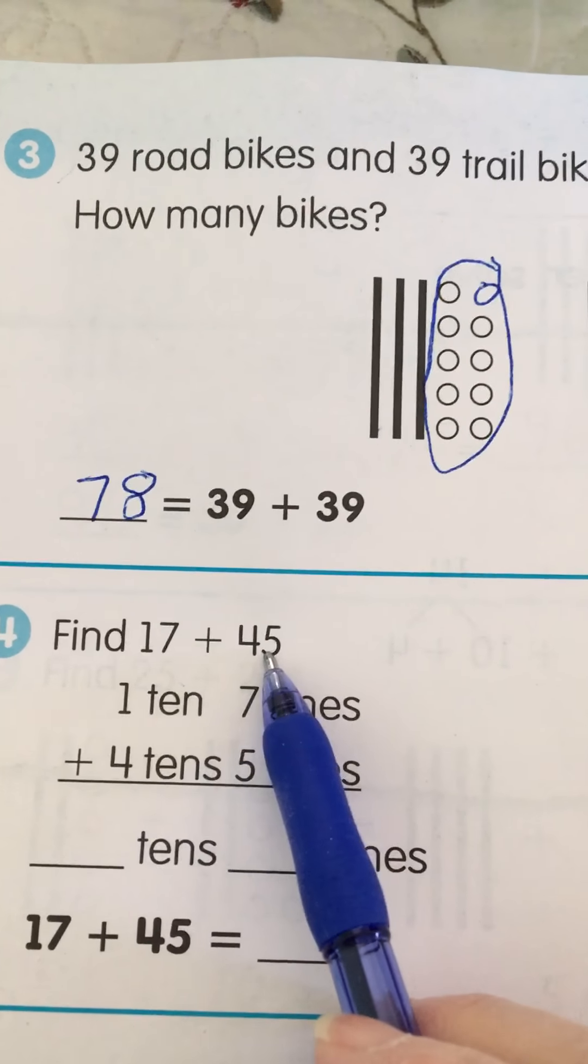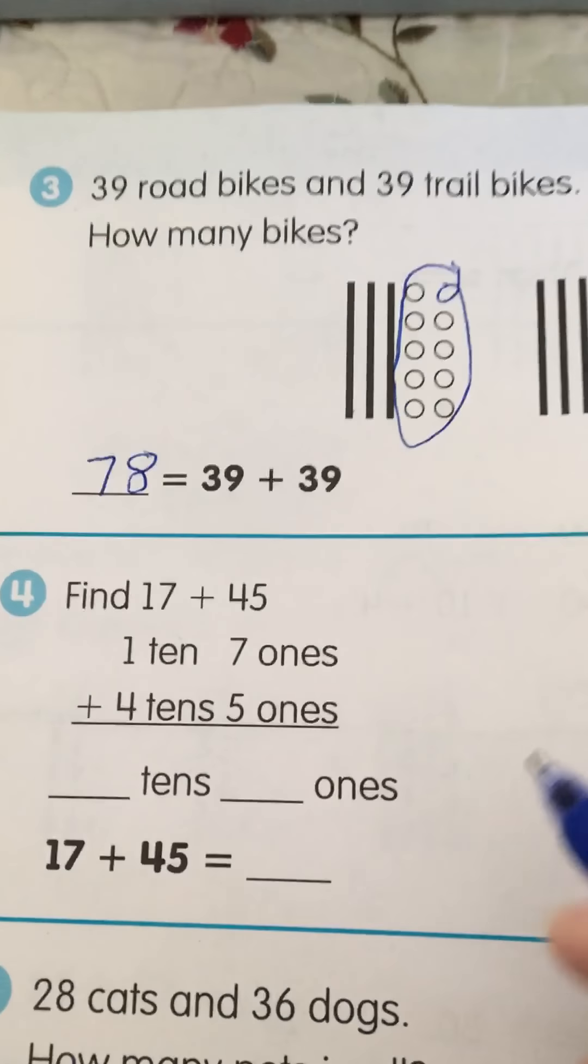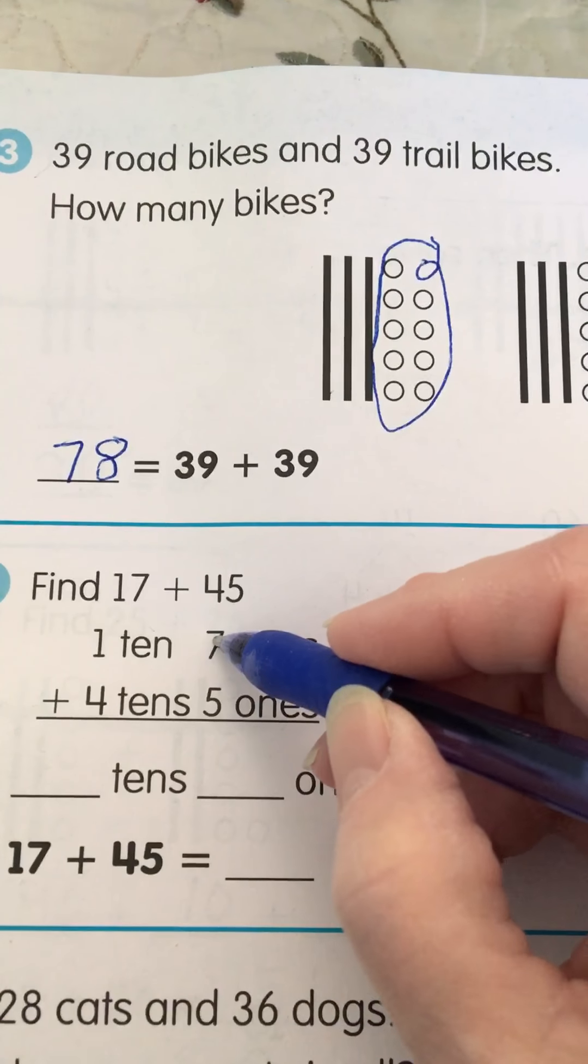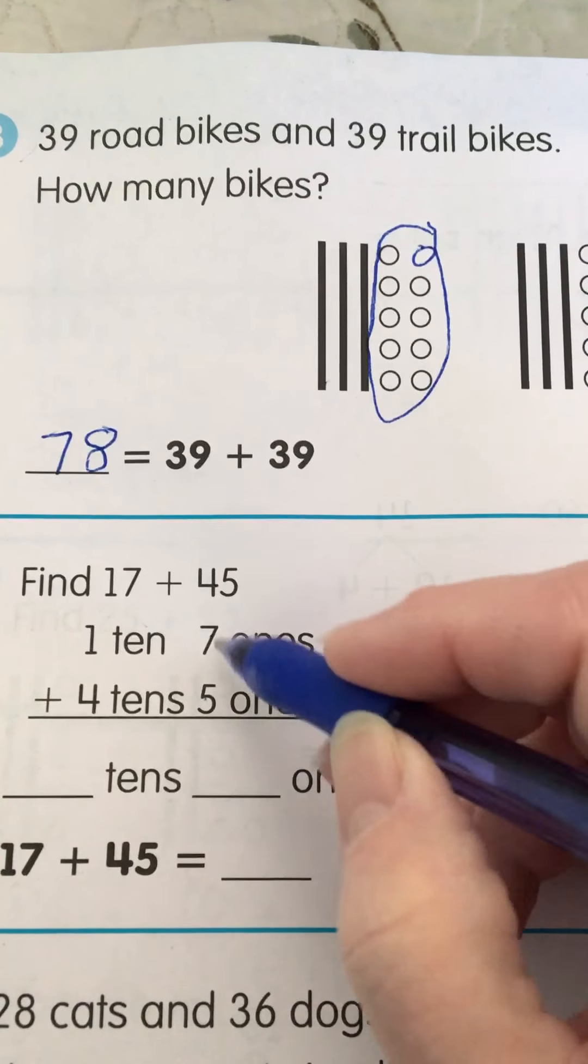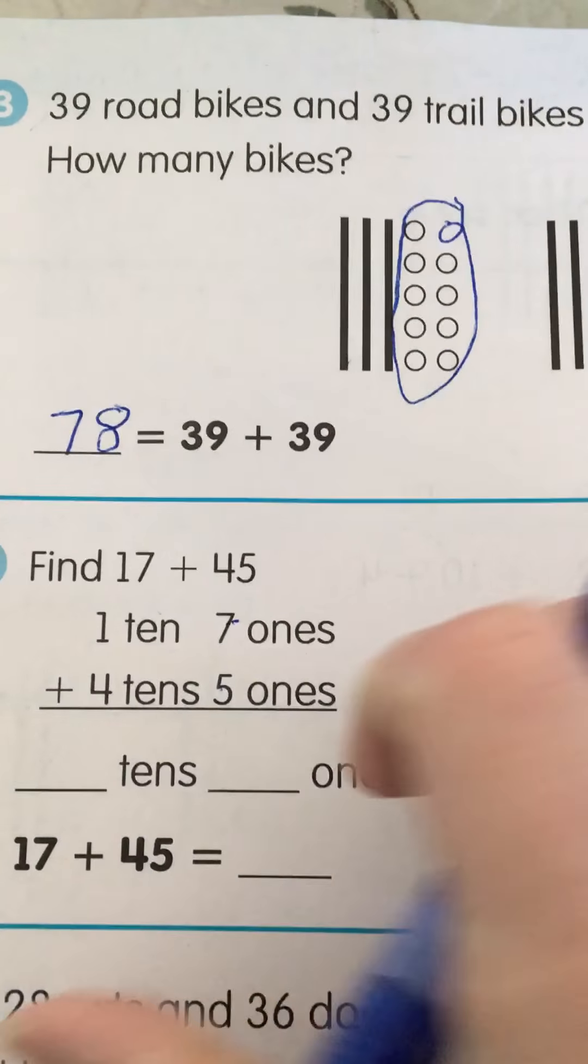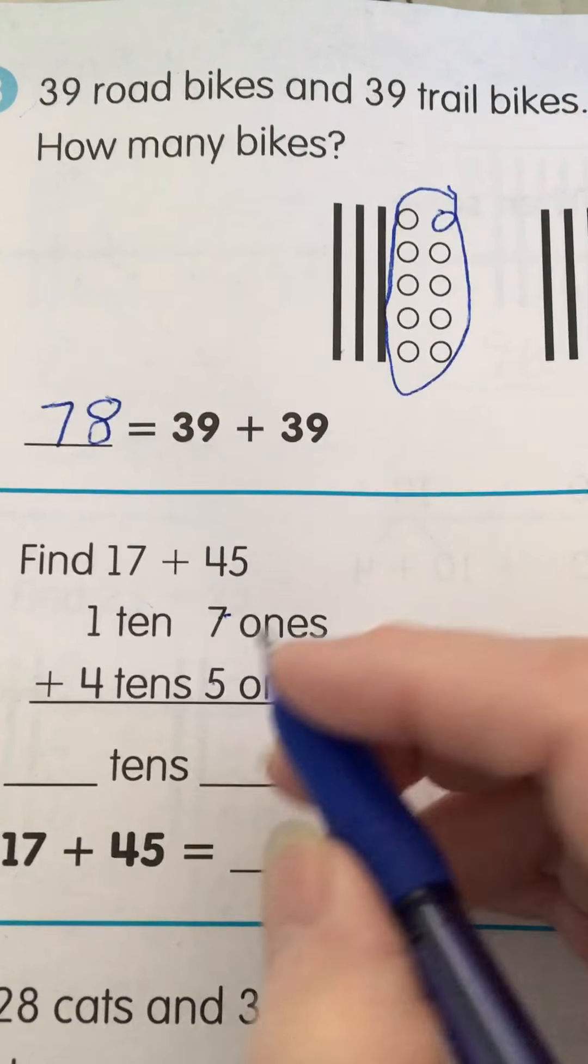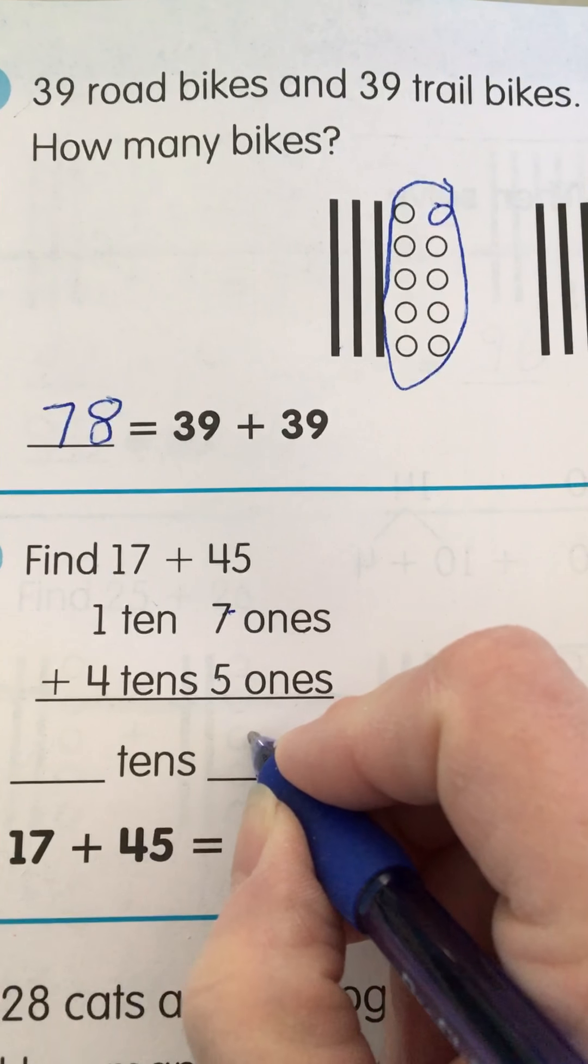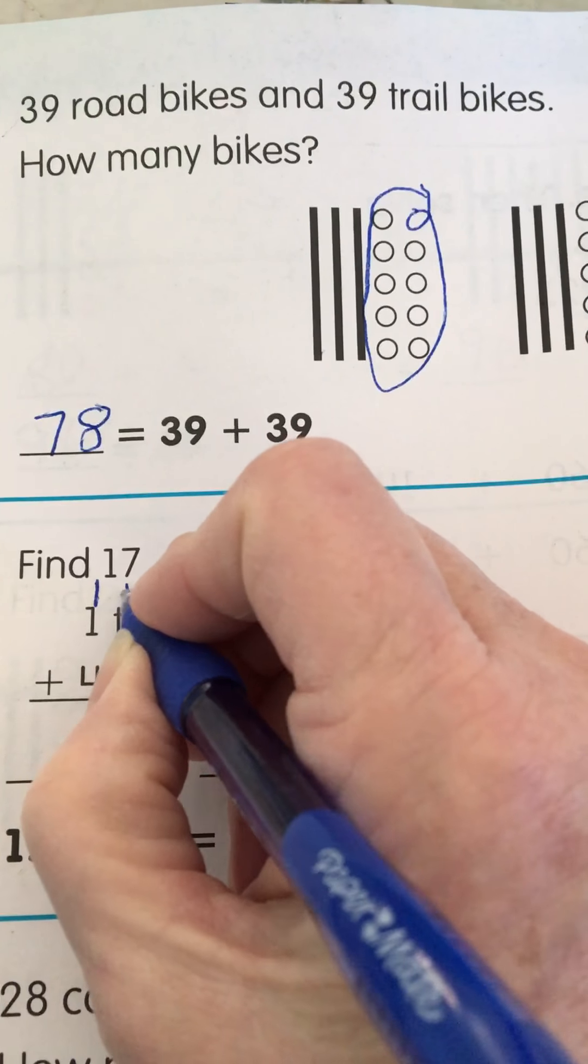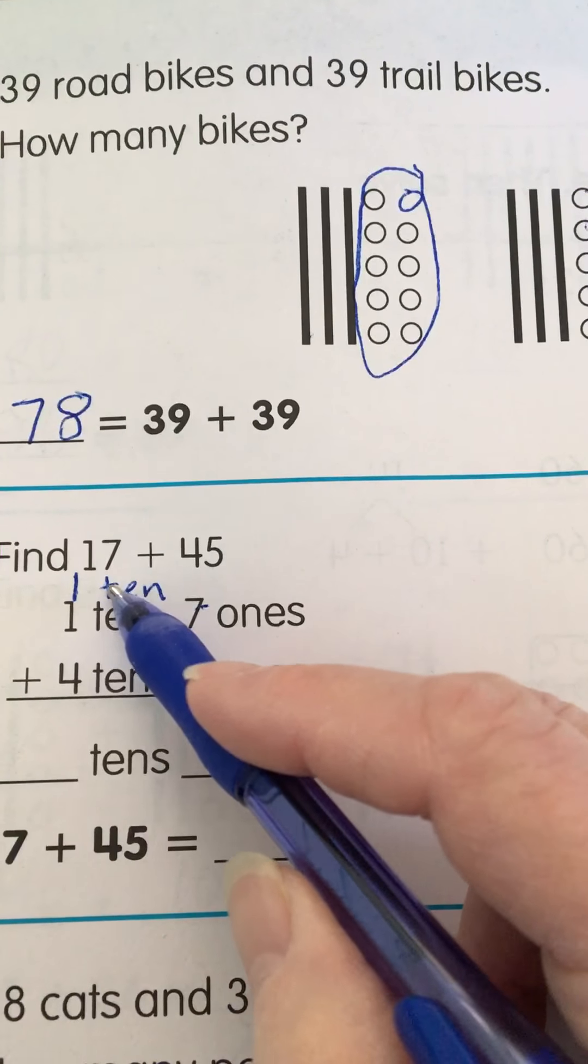Find 17 plus 45. Okay. So seven ones and five ones. I'm going to put seven in my head and count five. Seven, eight, nine, ten, eleven, twelve. Twelve. So I know that twelve is two ones and I'm going to have one ten left over. This is twelve. Two ones and one ten.